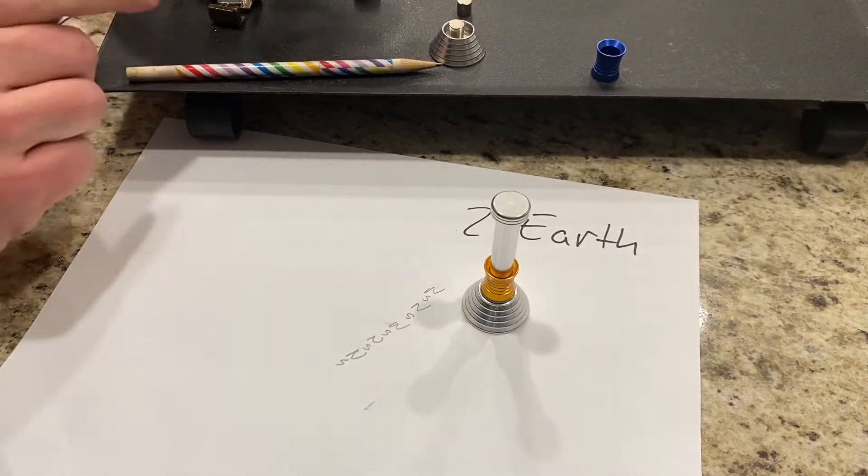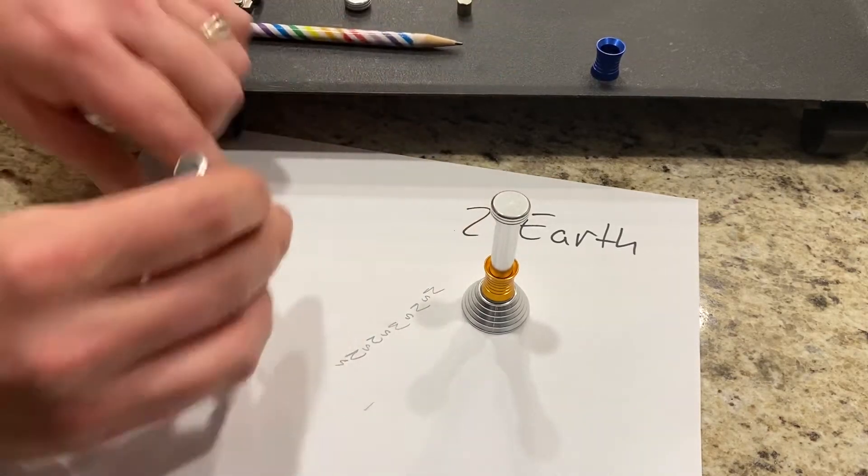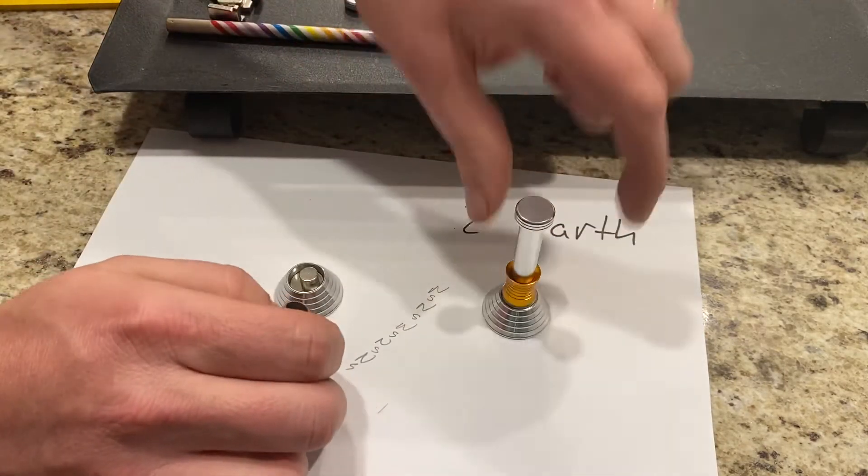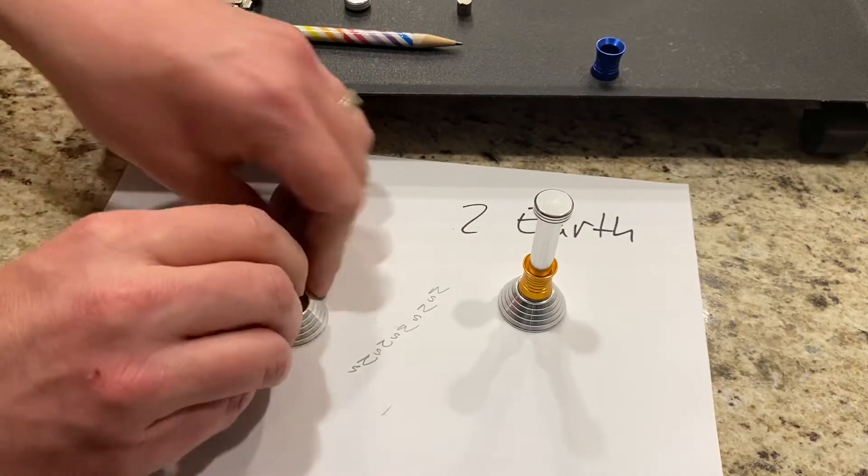So I'm going to put the Earth one back together real quick. And this just has the two magnets in it. So it looks like this is falling about the Earth's speed that we had together earlier.